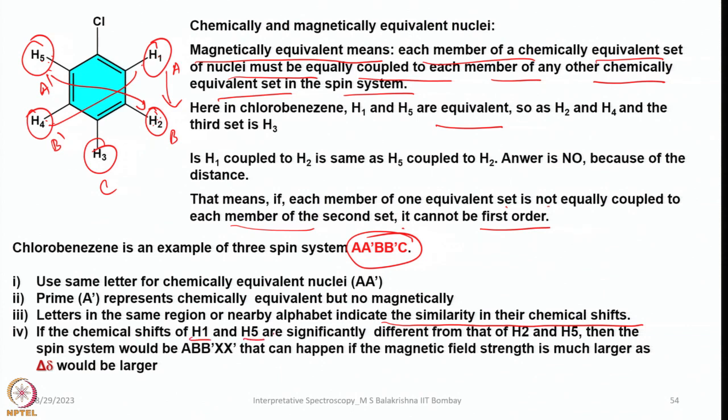If the chemical shifts of H1 and H5 are significantly different from those of H2 and H4, the spin system would be AA'BB'X, which can happen if the magnetic field strength is much larger since delta-delta would be larger. This is where the significance of going from low-field to high-field NMR instruments becomes apparent. When you go to higher field instruments, the chemical shift separation in hertz is much larger, and as a result, complicated second order spectra can be converted into simple first order spectra. This is why people look for 400, 500, or 600 MHz instruments instead of 200 or 300 MHz.